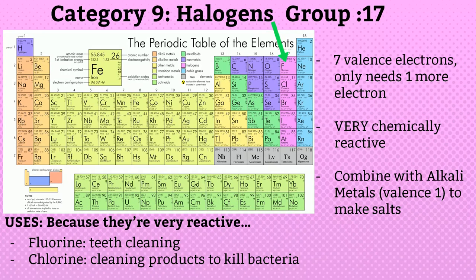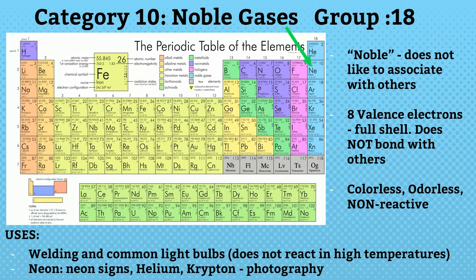Category 9: halogens, shown in pink color — that is group 17, also called the fluorine family. They have 7 valence electrons and need only one more, so they are very chemically reactive. They combine with alkali metals to make salts. Fluorine is used in tooth cleaning and chlorine is used in cleaning products to kill bacteria. Their valence is 1.